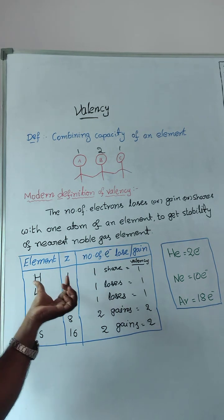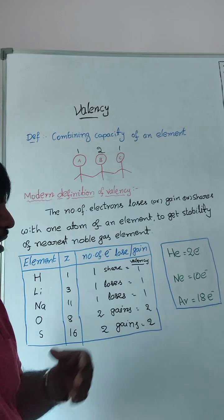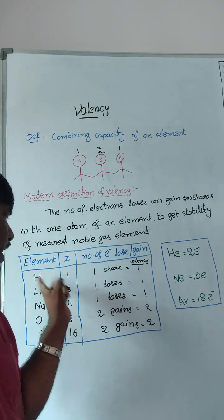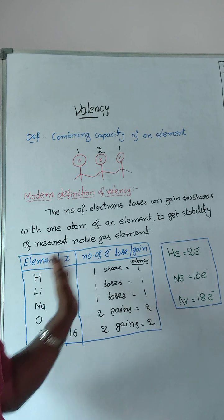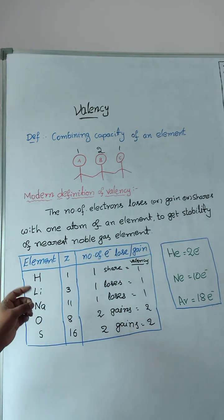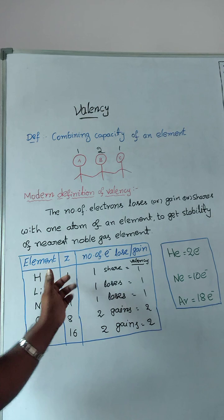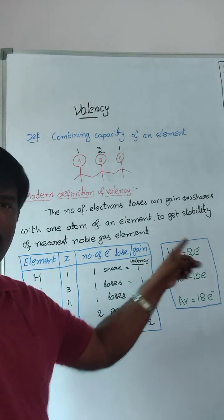See here, for example, hydrogen, hydrogen atomic number one. To get stability of his, hydrogen nearest noble gas element is helium. So to get stability of helium, it is going to share one electron. So when it shares one electron, already one electron is there, one more electron sharing, total two electrons like a helium.